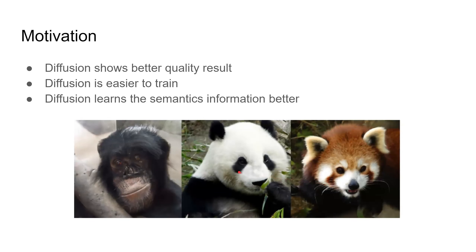Here are the generation results of the diffusion models. I purposely chose images with animals that have a lot of fur and mustache, because usually in generation tests these are the pretty difficult parts to generate. As you can see, it not only has pretty high fidelity, it also has pretty good quality. The resolution of those images is 1024 by 1024, which is pretty high resolution, and we can make it even higher.